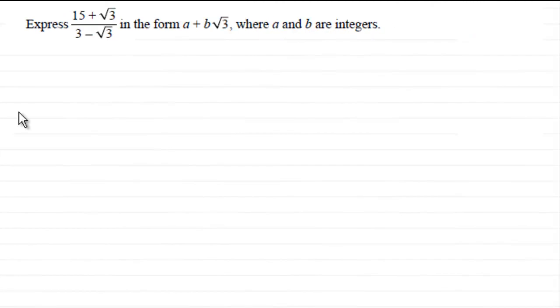Hi, now in this question we've got to express (15 + √3) / (3 - √3) in the form a + b√3, where a and b are integers.